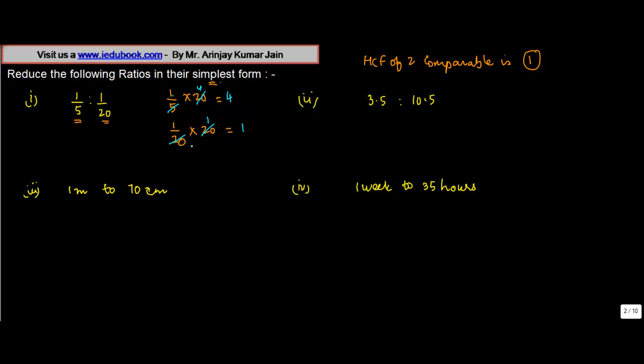In other words, this can be written as 4 is to 1. Now given that we already have 1 as one of the comparables, it cannot be simplified further and hence this is the simplest form of the ratio.